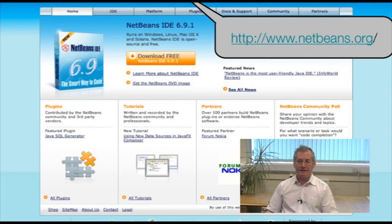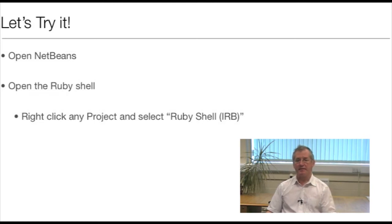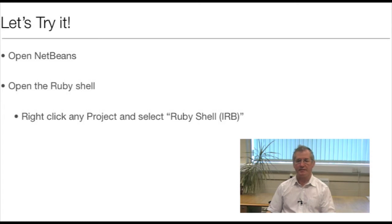So let's try it first. If you have NetBeans installed and this is the first time you've come across Ruby on Rails, the simplest thing to do is just to open a dummy Ruby on Rails project, initiate that project, and don't worry about any content. Just give it a name, accept the defaults, and open the project. Now you can right-click on that project and from the menu select the IRB — the interactive Ruby shell — and you'll see that appear at the bottom of the NetBeans window.